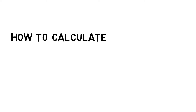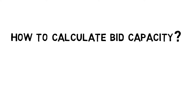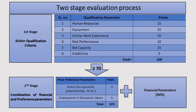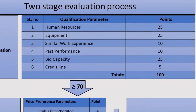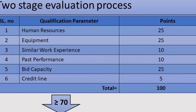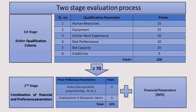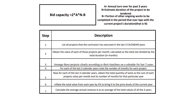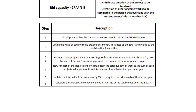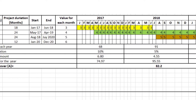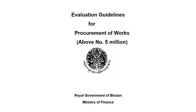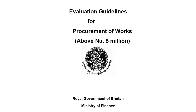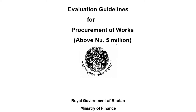Welcome to the video tutorial on how to calculate bid capacity. During the evaluation of works, bid capacity is an important parameter for qualification of bidders in the qualification stage. It carries 25 points in the qualification stage. The calculation is quite simple and this video will guide you step by step. Please watch the video till the end. You can also refer to the evaluation guidelines — the link to download the guideline will be provided in the video description below.